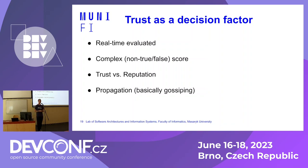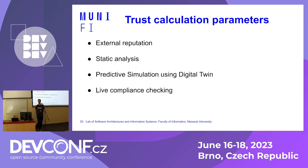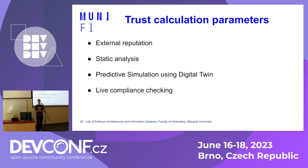We are also looking into reputation, which we interpret as trust assessed by other actors — basically gossiping. One autonomous vehicle has an interaction with another, it has a bad experience, and it shares that with others. To calculate trust — which may be a number — we would use this external reputation on smart agents and software modules. We can use static analysis to find vulnerabilities. The important part, which is input to my research, is predictive simulation using digital twins, and based on the results of those digital twins we can do live compliance checking.